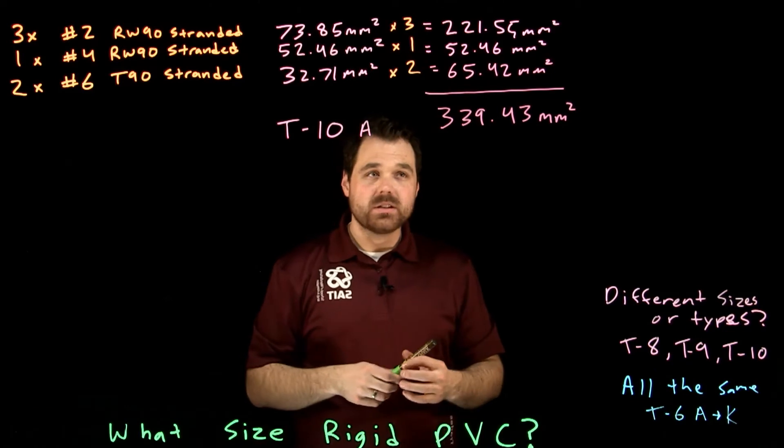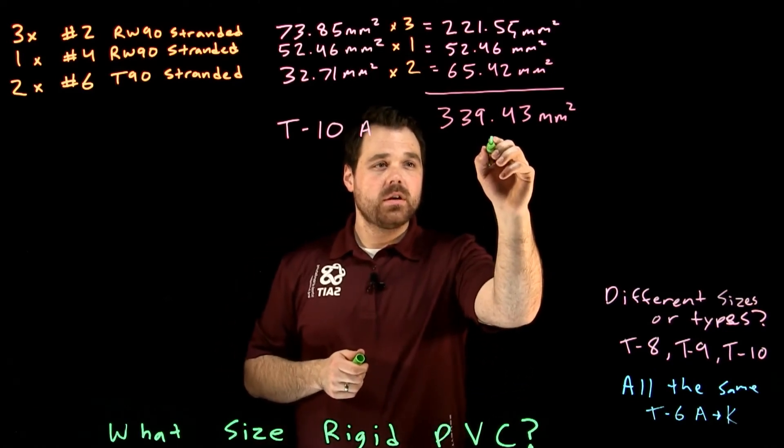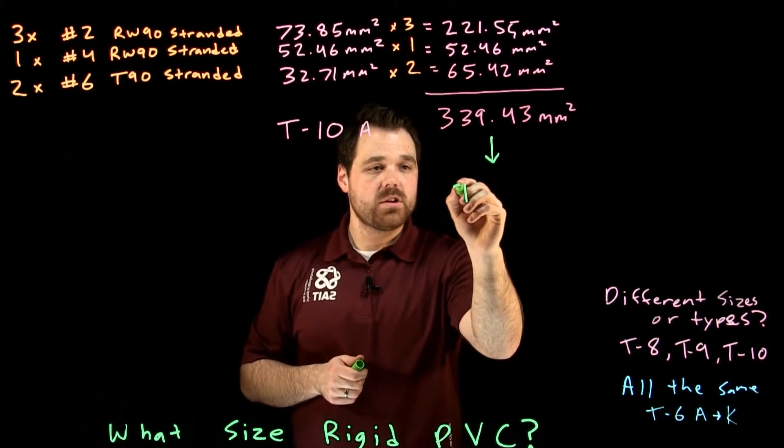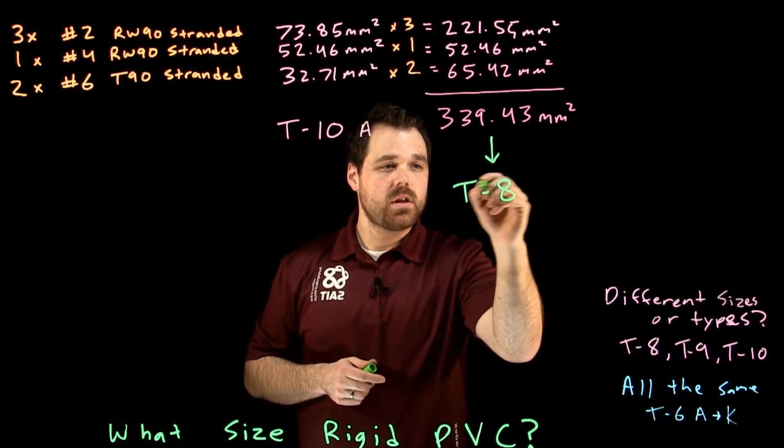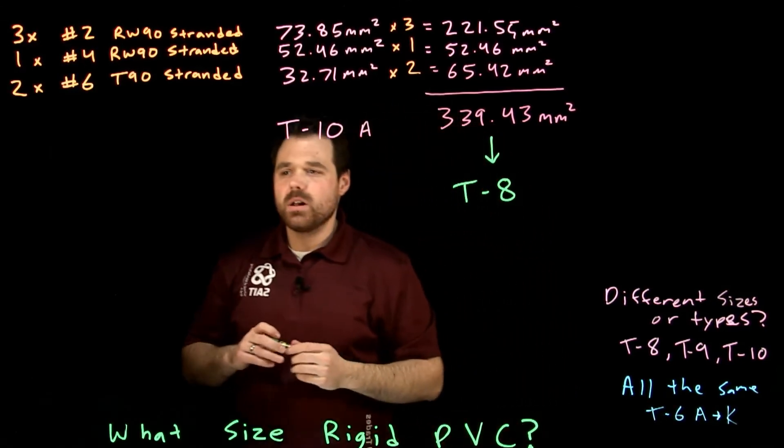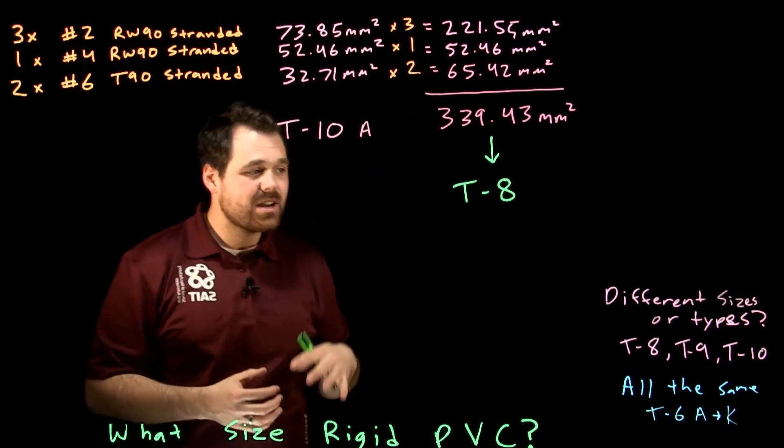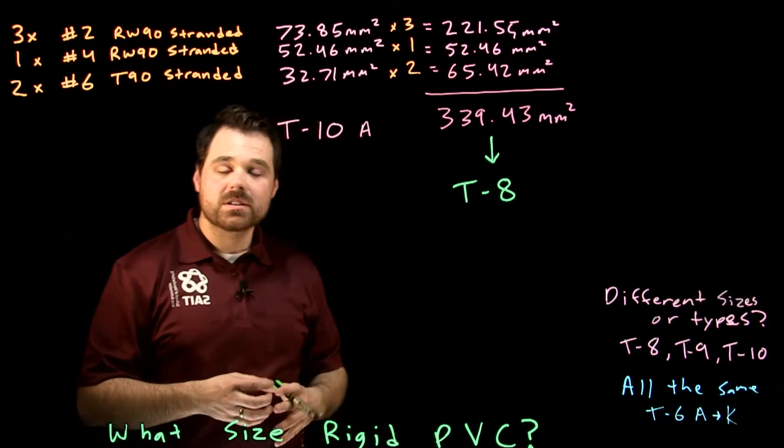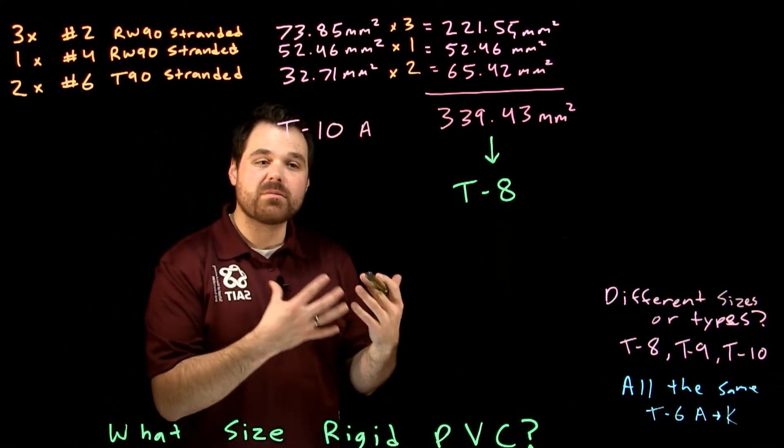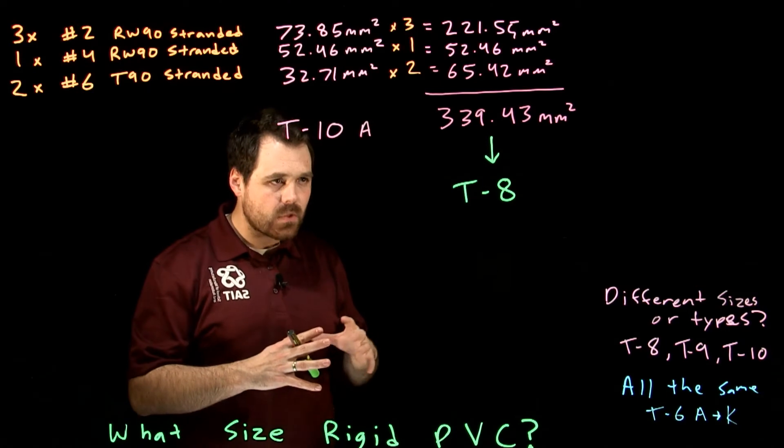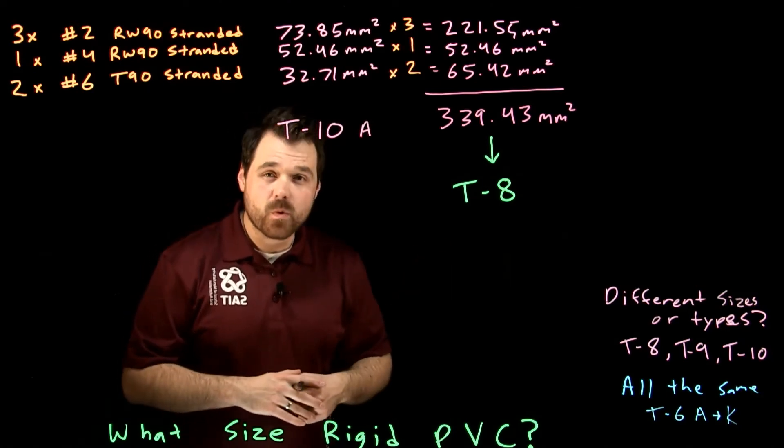Now what we have to do next is we have to take this number and we're going to go to table eight. Now what table eight tells us, table eight is actually telling us how much space you are allowed to take up in that conduit. So it's usually around forty percent.